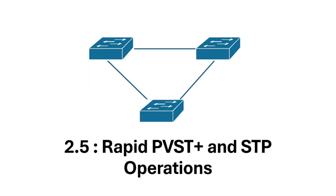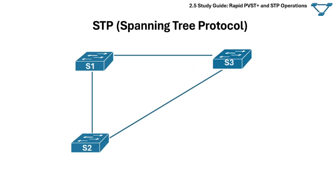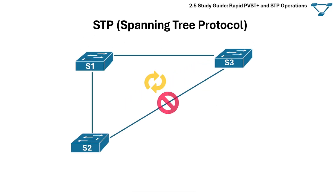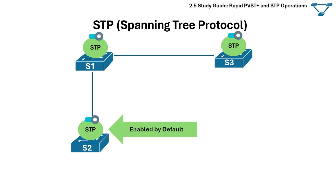Section 2.5 is about Rapid PVST+ and STP operations. The Spanning Tree Protocol, or STP, is a network protocol that prevents loops in Ethernet networks by disabling redundant paths and breaking the redundant physical topology into a logical loop-free one. Spanning Tree is enabled by default on all Cisco switches.